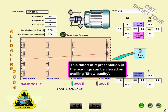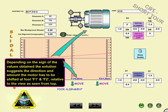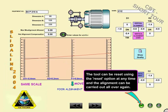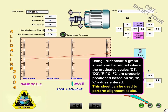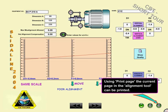D1 and D2 values are calculated by representing the readings differently and then dividing the TIR by 2. This different representation of the readings can be viewed on availing Show Quality. Depending on the sign of the values obtained, the solution suggests the direction and amount the motor has to be shifted at feet F1 and F2, relative to the view as seen from the top. The tool can be reset using the reset option at any time, and the alignment can be carried out all over again. Using Print Scale, a graph sheet can be printed where the graduated scales D1, D2, F1, and F2 are properly positioned based on the A, B, and C values entered.